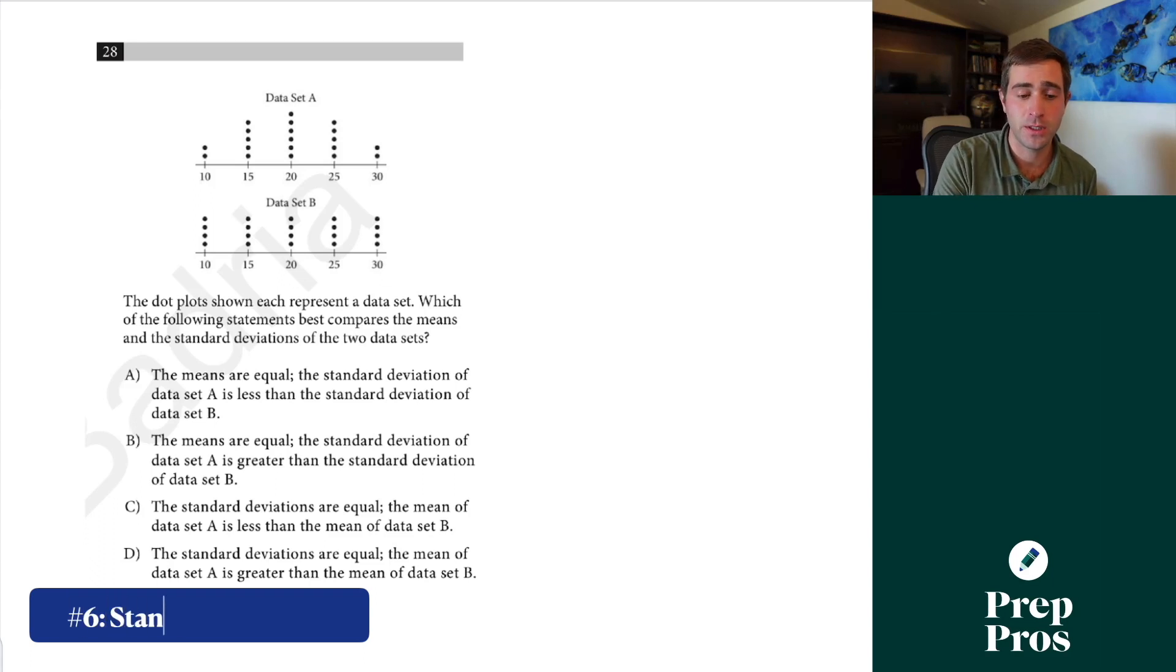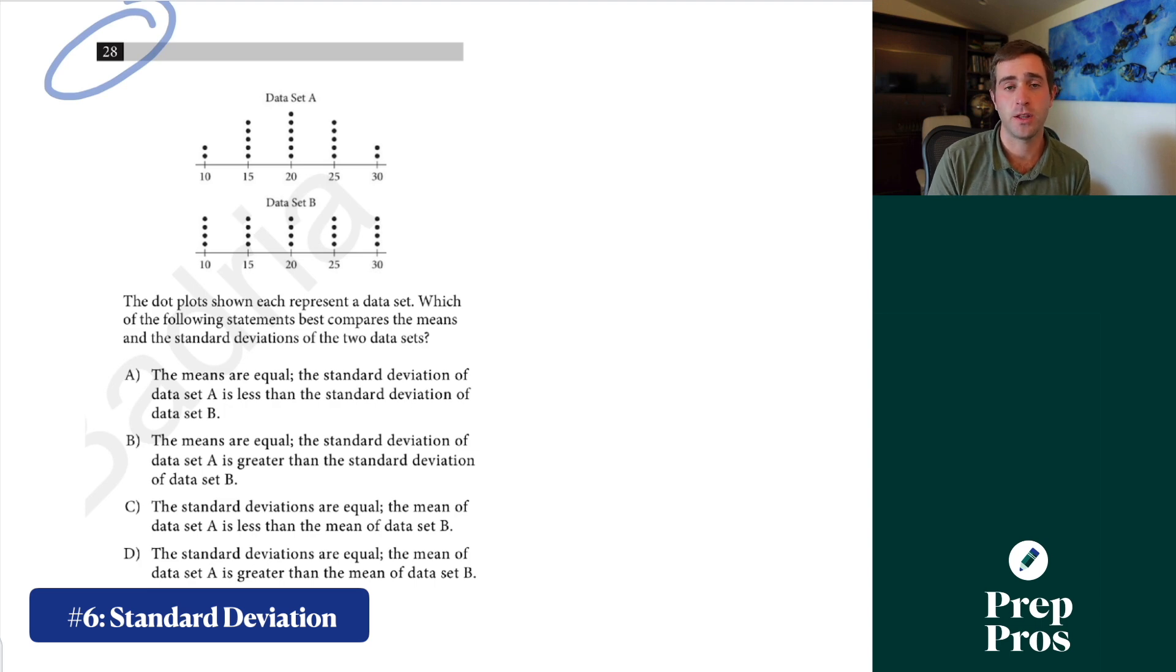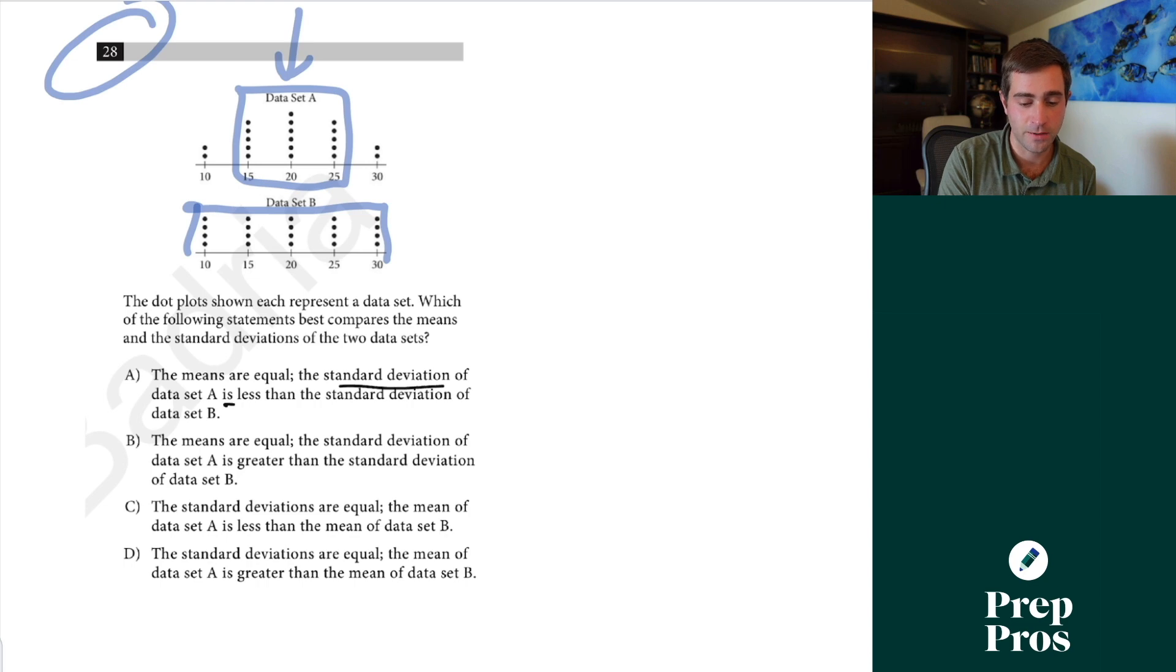All right next up is standard deviation. Now although this is supposed to be one of the hardest questions on the test it's really easy to learn. Standard deviation on the SAT all you have to understand is it's about the spread of the values in a data set. If values are more closely clumped together towards the middle of the data set like we see in data set A where they're all more evenly spread out in data set B this one is going to have a comparatively smaller standard deviation than the other one. You can just visually look at it closer together smaller spread further apart larger. So this is going to let us identify that well the standard deviation of A is less than B so we know that's not right and we know the standard deviations aren't equal so we don't even have to calculate the mean part and we can tell that A is correct.